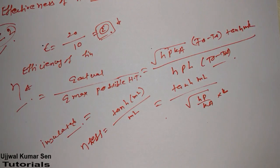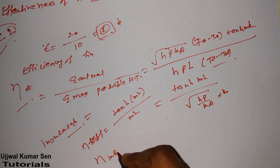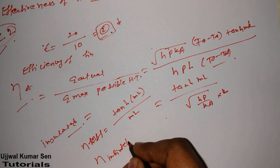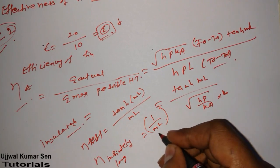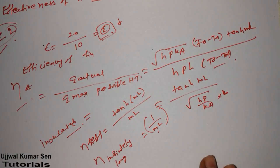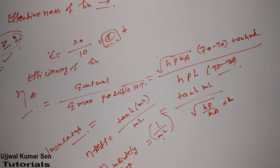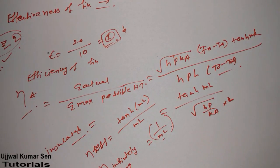If the fin is infinitely long, the efficiency is 1/(mL), where m is the slope and L is the length. This concludes the lecture on fins. We covered fin basics, the governing differential equation, heat transfer rate formulas for different cases, effectiveness, and efficiency. Thank you for watching — see you in the next video!